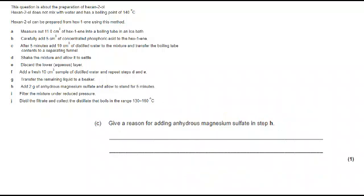Let's move on to part C. Give a reason for adding anhydrous magnesium sulfate in step H. Well, hopefully you're remembering that magnesium sulfate here is used as a drying agent. What do we mean by a drying agent? We are removing that water that we have added.